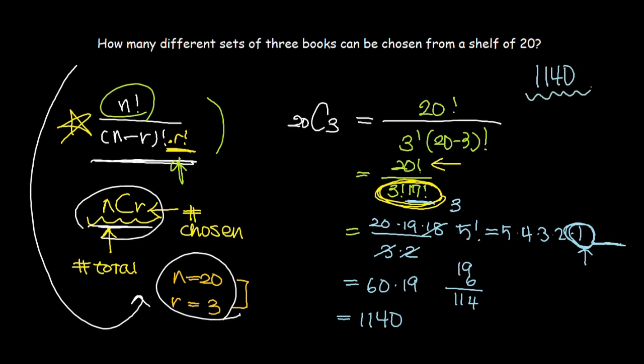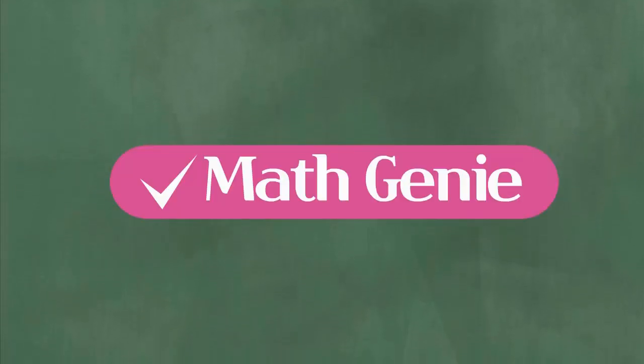That's the number of different sets of three books you can choose from a shelf of 20. Please do not forget to divide by 3 factorial. Thank you for watching until the end of this video. Math Genie!